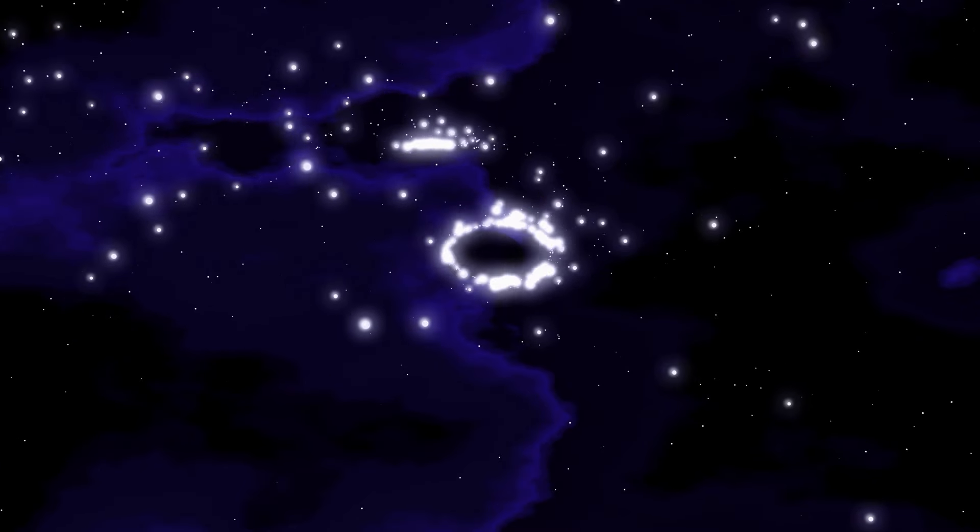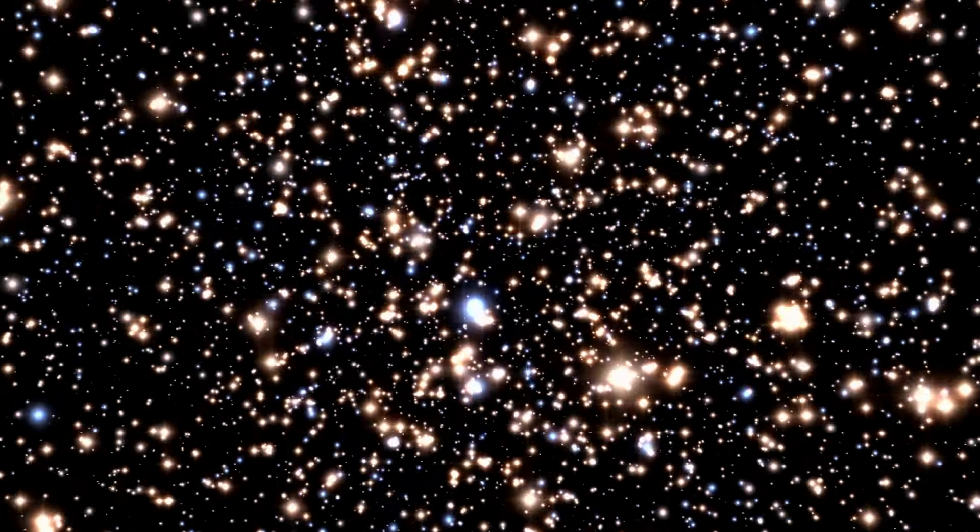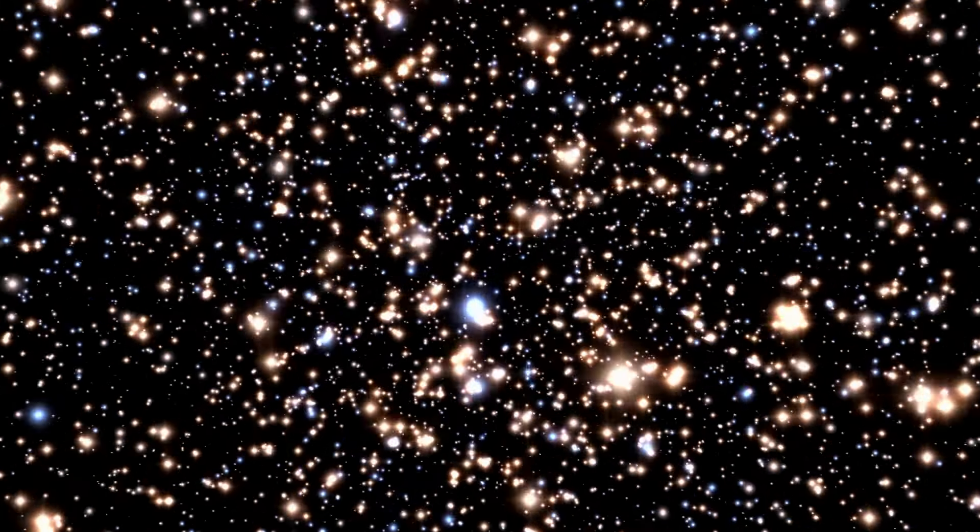Scientists often start their search for black holes by looking for clusters of frantically orbiting stars. The gravitational pull of a black hole is so powerful that stars zoom through their orbits around it at fantastic speeds. This method has helped scientists determine that nearly every galaxy contains a black hole at its center.